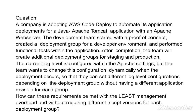Hello everyone and welcome back to our channel. For today, our first question: a company is adopting AWS CodeDeploy to automate its application deployments for a Java Apache Tomcat application with an Apache web server. The development team started with a proof of concept, created a deployment group for a developer environment, and performed functional tests within the application. After completion, the team will create additional deployment groups for staging and production.